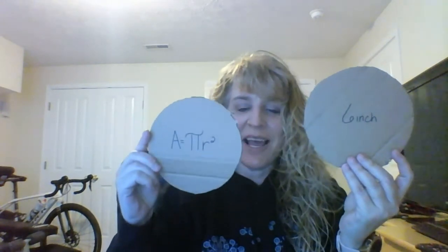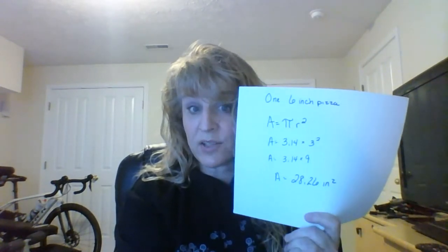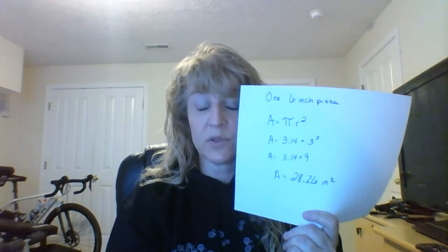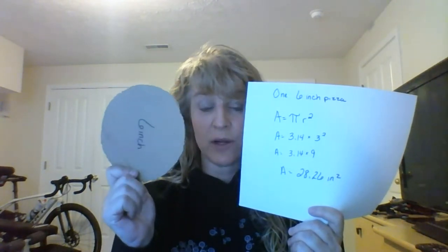So what we have to first look at is my 6-inch pizza. This is an actual measured diameter of 6 inches, which means the radius is 3 inches. So when we look, we have our formula. I have two 6-inch pizzas. Area equals pi r squared. Pi is 3.14 times 3 squared — 3 times 3 is 9 — so 3.14 times 9 equals 28.26 square inches. That means one of these has an area of 28.26 square inches.